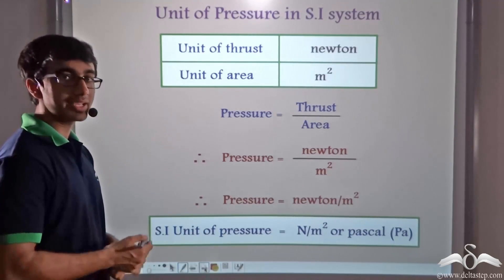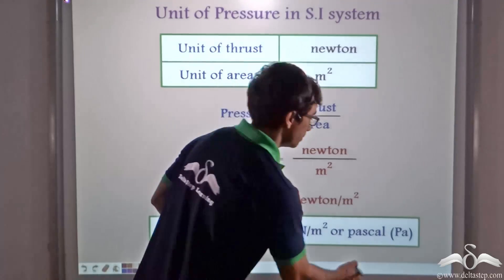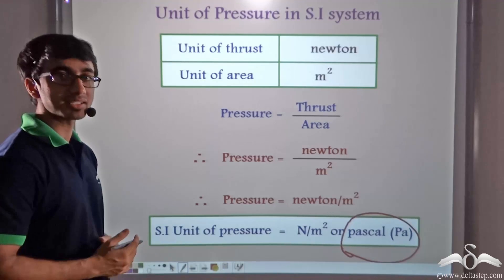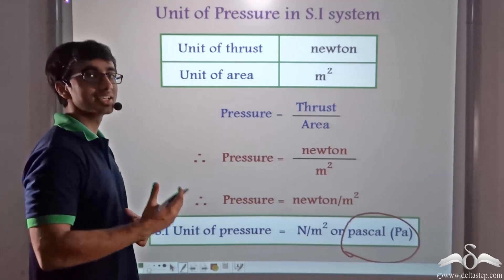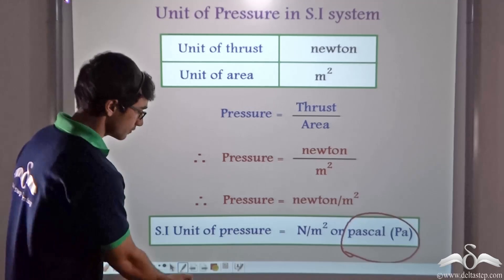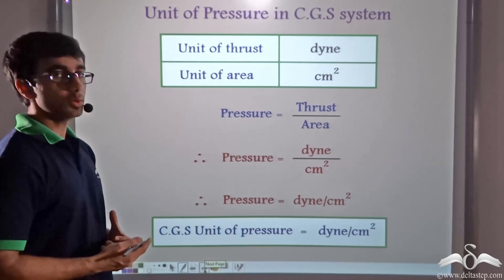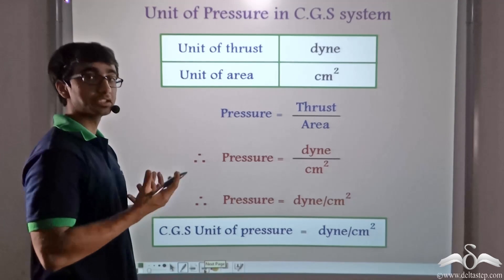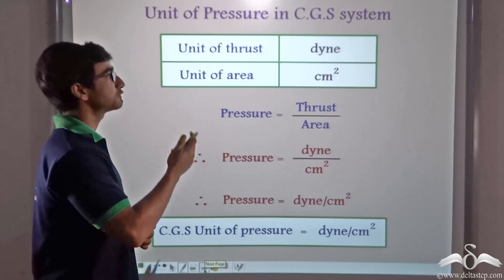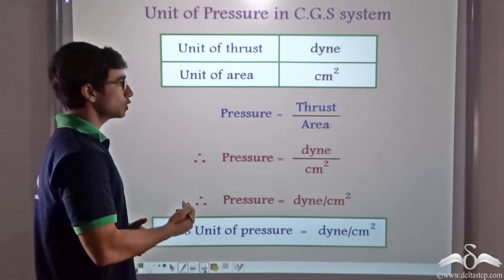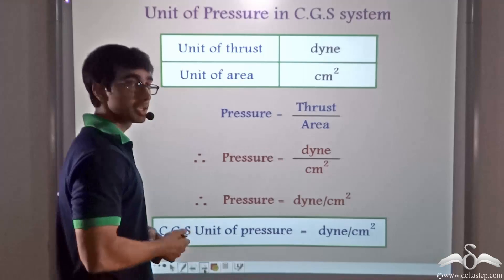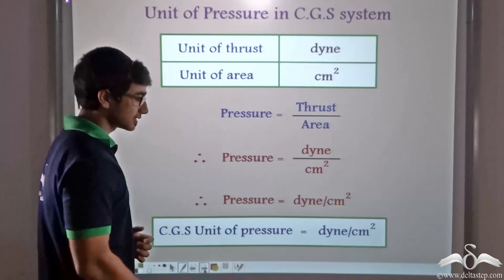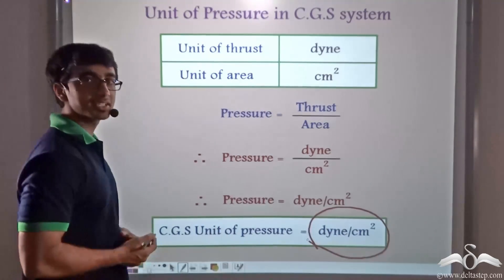Newton per meter squared is also known by another name: Pascal. This unit Pascal has been named after the famous scientist Blaise Pascal, who conducted extensive studies in this area of science. Similarly, the CGS unit of pressure is dyne per centimeter squared, since the CGS unit of force is dyne and the CGS unit of area is centimeter squared.